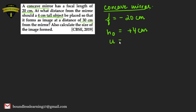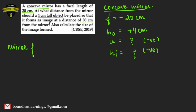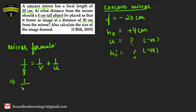We need to find object distance u and height of image. We know v will be negative. Using the mirror formula: 1/f = 1/v + 1/u, substituting 1/f = 1/(−20) and v = −30 cm.